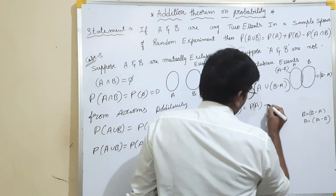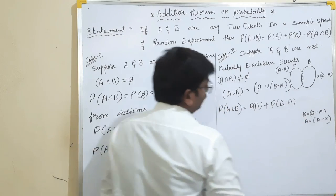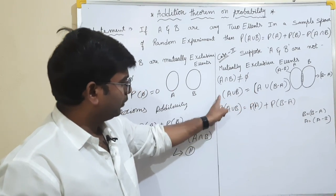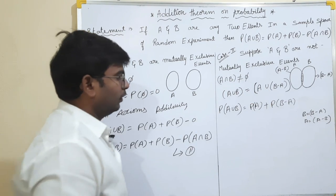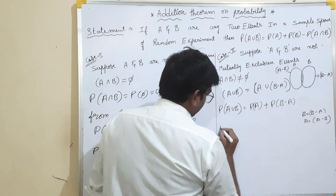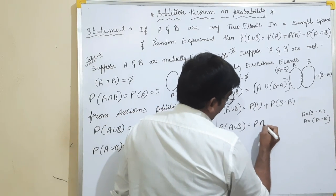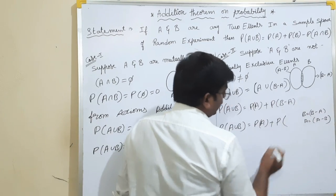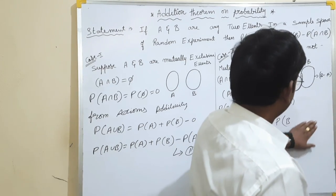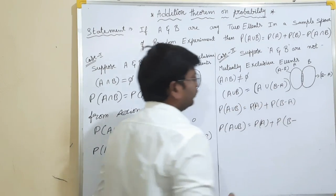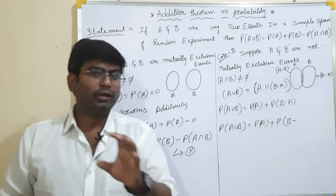The union function will be plus. Next, P of B minus A. From the axioms of additivity, since A and B minus A are disjoint, P of A union B equals P of A plus P of B minus A.